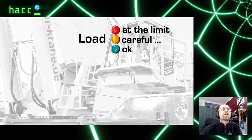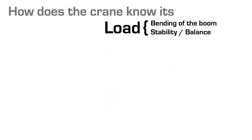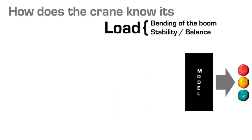That means what you'd expect: be careful and at the limit. So what is the load of the crane? One factor is the bending of the boom — the boom is a long stick bent from the weight at its tip on the hook. There's also the stability, the balance between the lifted mass and the counterweight. How does the crane know all of these things? There's a model that calculates this and drives the traffic lights.